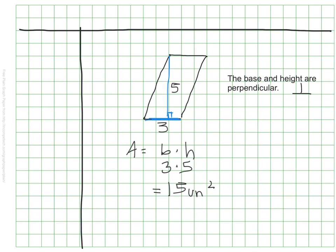As always, we will be doing more practice together in class. The essential question was: how do we calculate the perimeter and the area of parallelograms? We've seen that the perimeter can be found by simply adding up the lengths of all the sides, and the area is found by using base times height, where the base and height meet at a perpendicular or right angle.